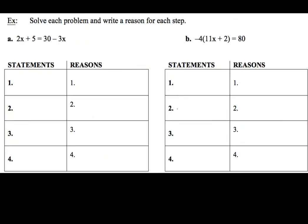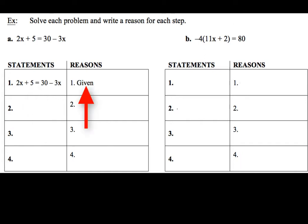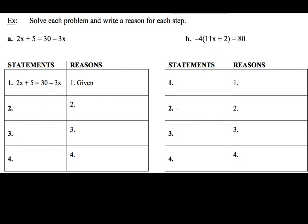Now we're going to take a look at example A. We have 2x plus 5 equals 30 minus 3x. On the statement side, anytime you're going to start an algebra proof, you're just going to write down the very first equation that you're given, and the reason for that is 'given.' Now the next step — there are four different terms here, so it's really up to you how your brain reasons through this. I like to keep the variables positive, so I'm going to move the negative 3x term over to the left hand side by adding 3x to both sides, to come up with 5x plus 5 equals 30.